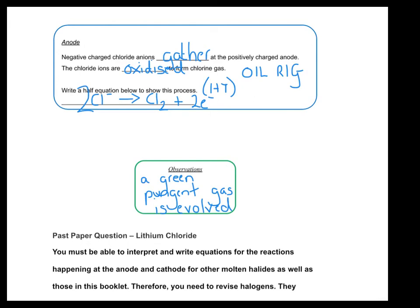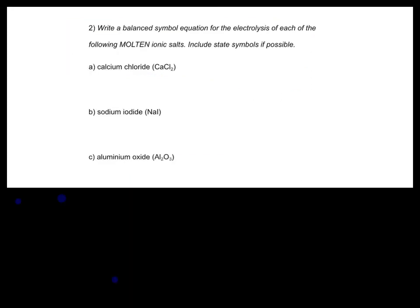We've now covered the two examples we need for our GCSE. Sometimes you might be asked to apply your knowledge to other examples. In question 2, we're asked to write balanced symbol equations for the electrolysis of molten ionic salts, including state symbols. For the first example, calcium chloride: the electrolyte is molten (state symbol L for liquid), it decomposes to form calcium metal as a solid, and it forms the non-metal element chlorine as a gas — very similar to the lithium chloride example.